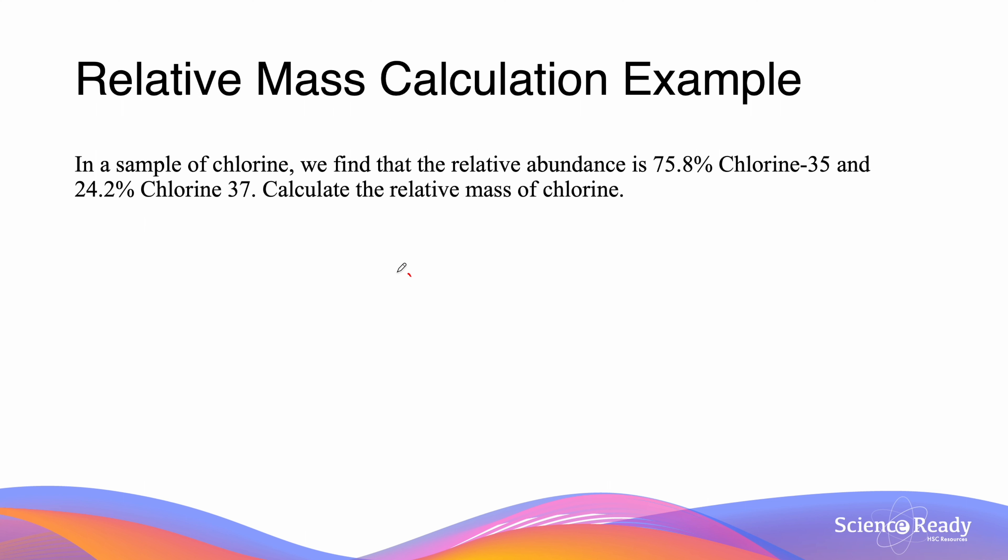Chlorine 35 has a mass of 35 relative to carbon 12, and chlorine 37 has a mass of 37 relative to carbon 12. We then multiply both of these by the relative abundances. So 75.8% for 35 and 24.2% for 37.